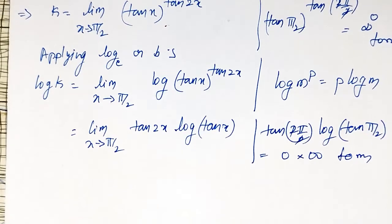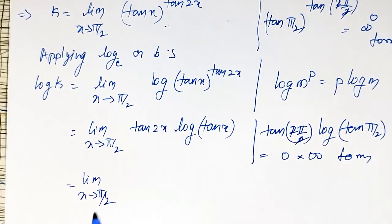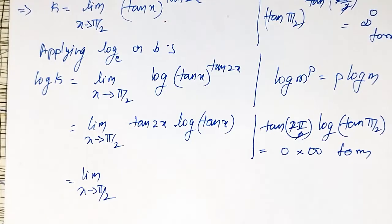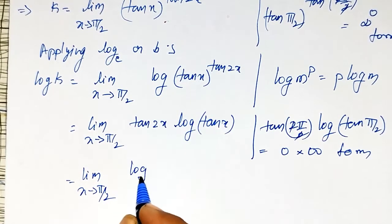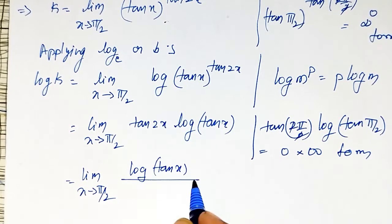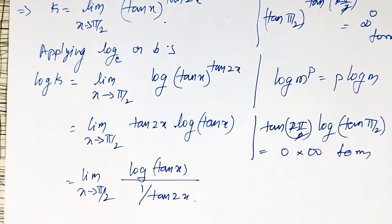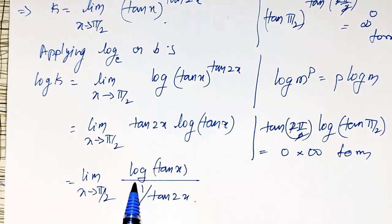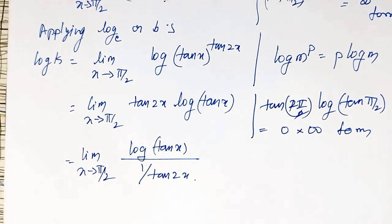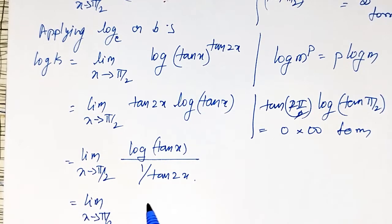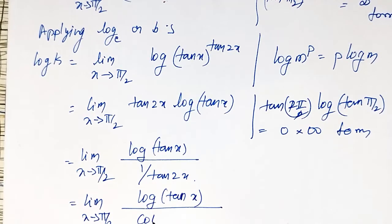Now, I still cannot apply L'Hôpital's rule directly. To apply L'Hôpital's rule, I will rearrange the terms to get 0/0 or ∞/∞ form. I will write it as log(tan x) divided by 1/tan(2x). Reciprocating gives the same thing. I can also write 1/tan as cot, so it becomes log(tan x) divided by cot(2x).